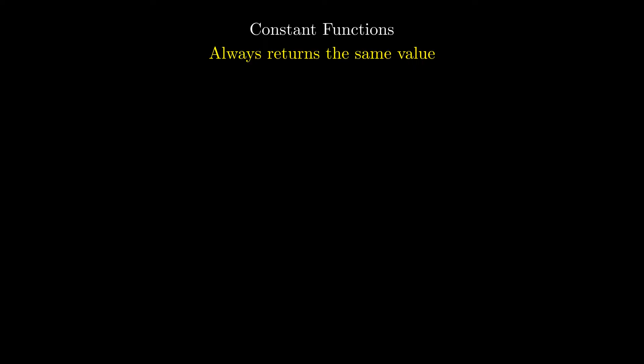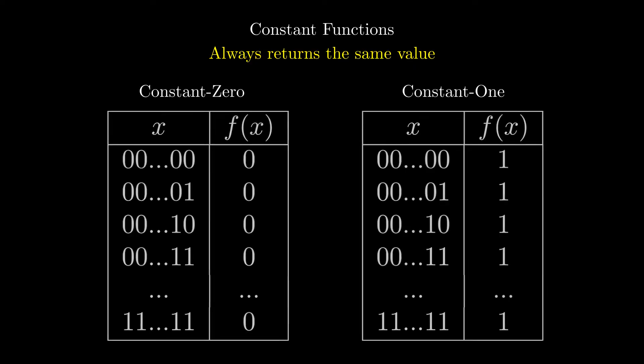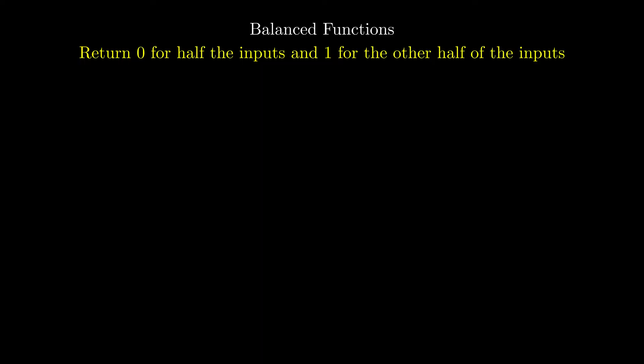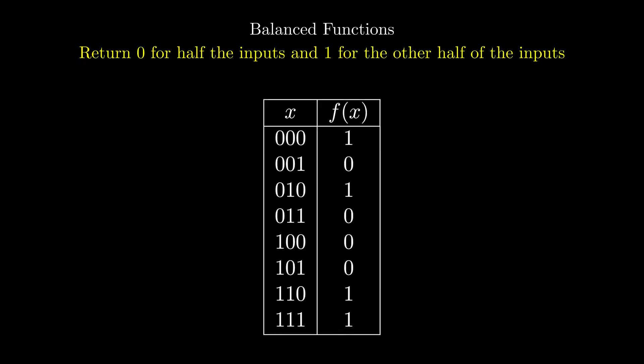Let's quickly revise constant and balanced functions. Constant functions always return the same value no matter the input — here are the two constant functions: constant 0 and constant 1. Balanced functions return 0 for half the inputs and 1 for the other half. Here is an example of a balanced function that takes in a bit string of length 3; the function returns 0 for 4 of the inputs and 1 for the other 4.